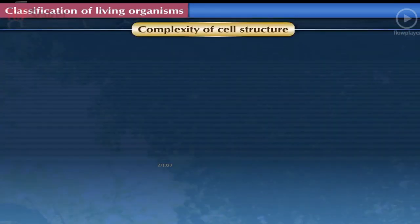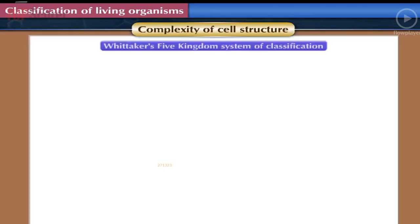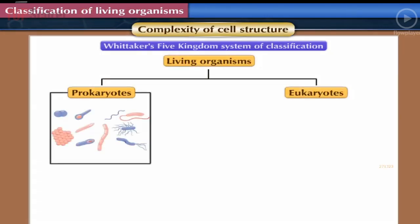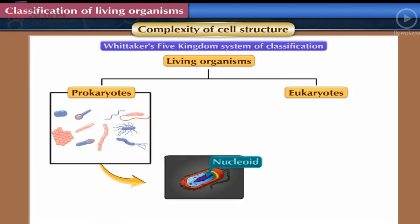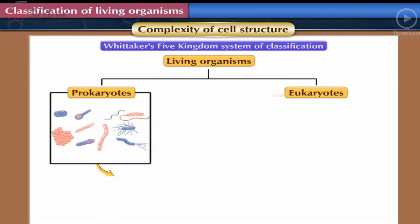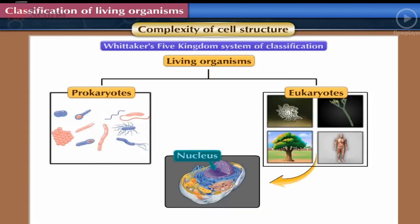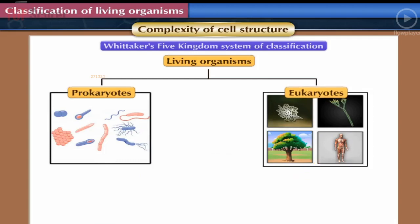Complexity of Cell Structure: Whittaker divided all living organisms into two groups — Prokaryotes and Eukaryotes — considering their cell structure. Organisms which do not have a definite nucleus in their cell were included in Prokaryotes, while organisms which have a definite nucleus were included in Eukaryotes.